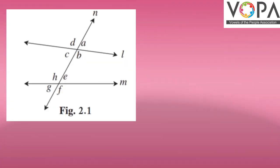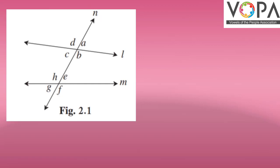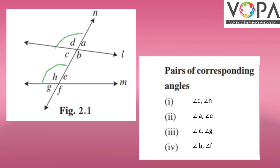Let us now recall the different angles associated with the parallel lines. In the figure, line L is parallel to line M and line N is the transversal. So here, we will have pairs of corresponding angles which are on the same side of the transversal but above the parallel lines or below the parallel lines.